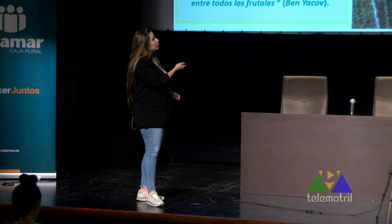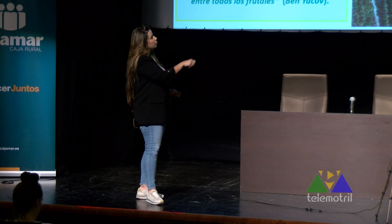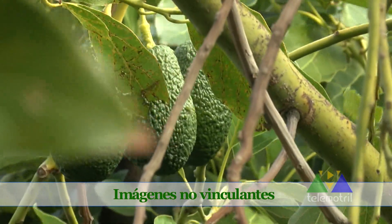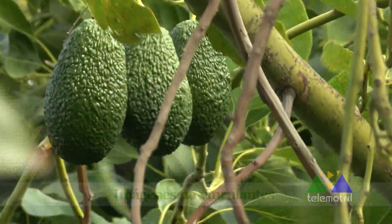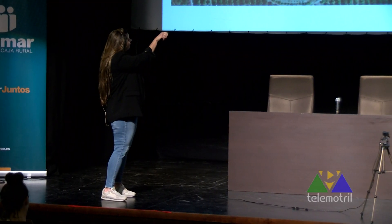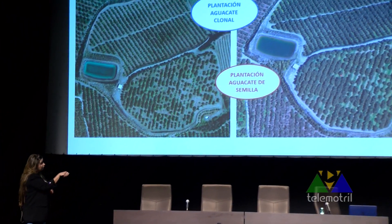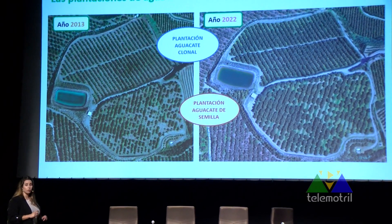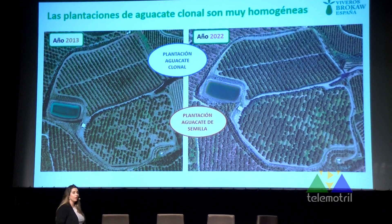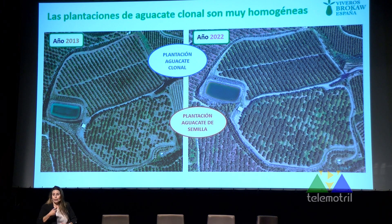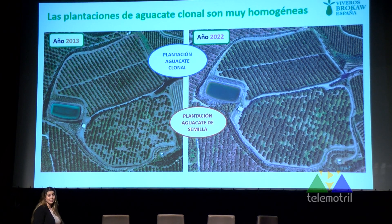Se podría pensar que los árboles más pequeños de semilla con el tiempo aumentarán su tamaño y se igualará la finca. Aquí tenemos lo que ha pasado desde el año 2013 hasta el año 2022: sí, podemos ver que hay árboles que han crecido y con la poda igualamos el tamaño, homogenizamos, pero la genética sigue siendo muy diferente. Por lo tanto, aunque el tamaño se iguale, la producción o la tolerancia a deficiencias nunca se va a igualar porque la genética es diferente.